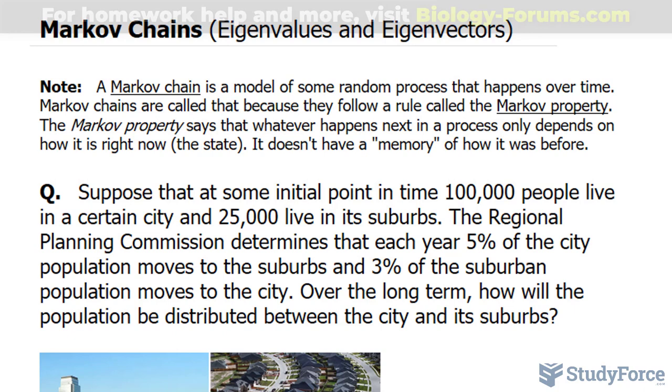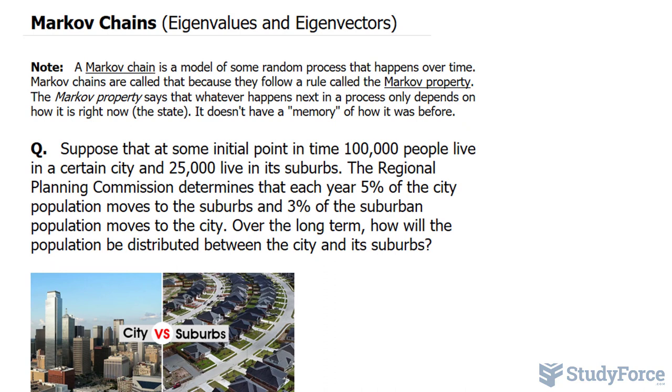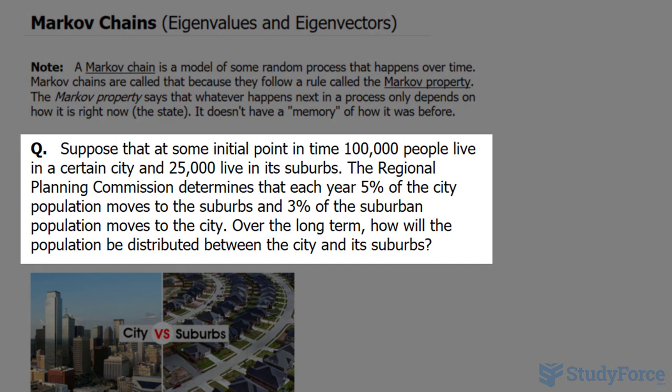A Markov chain is a model of some random process that happens over time. Markov chains are called this because they follow a rule called the Markov property. The Markov property says that whatever happens next in a process only depends on how it is right now, the state. It doesn't have a memory of how it was before.